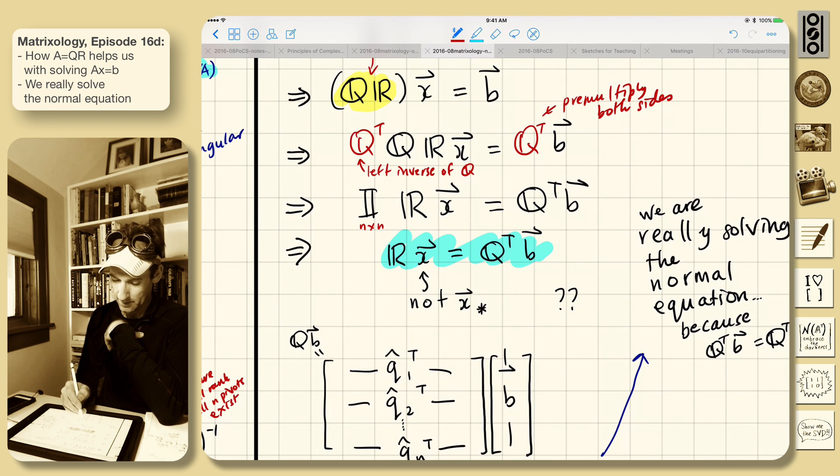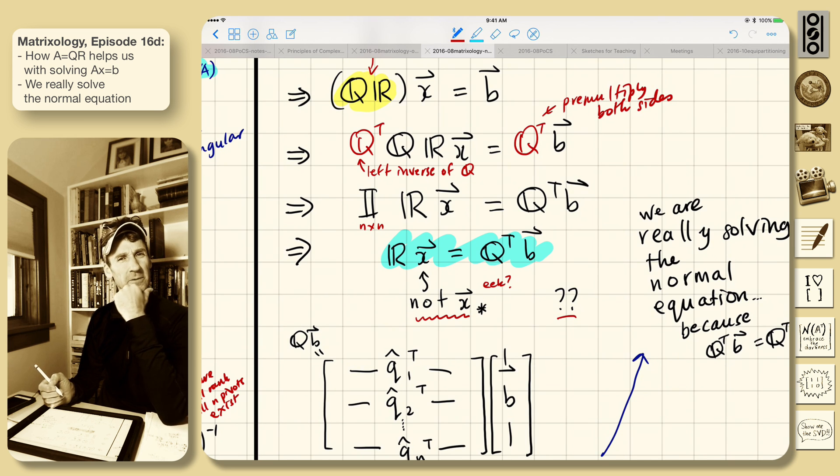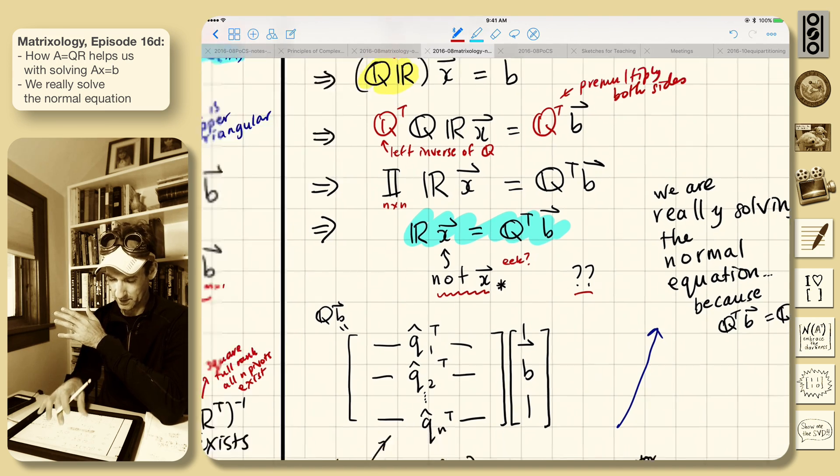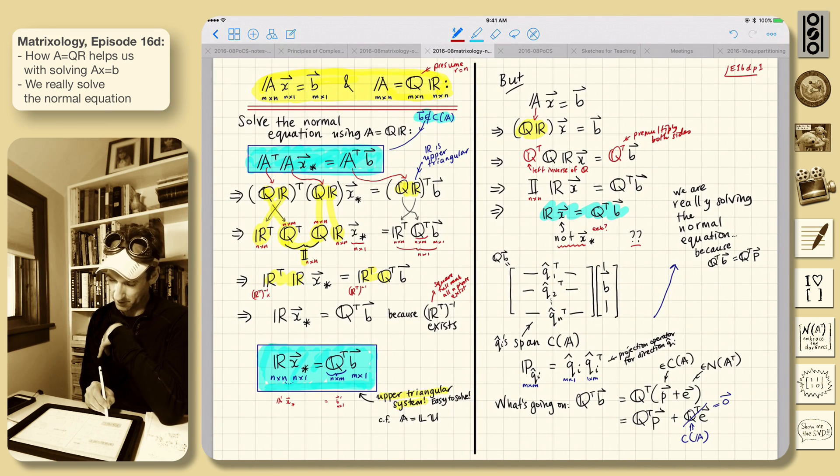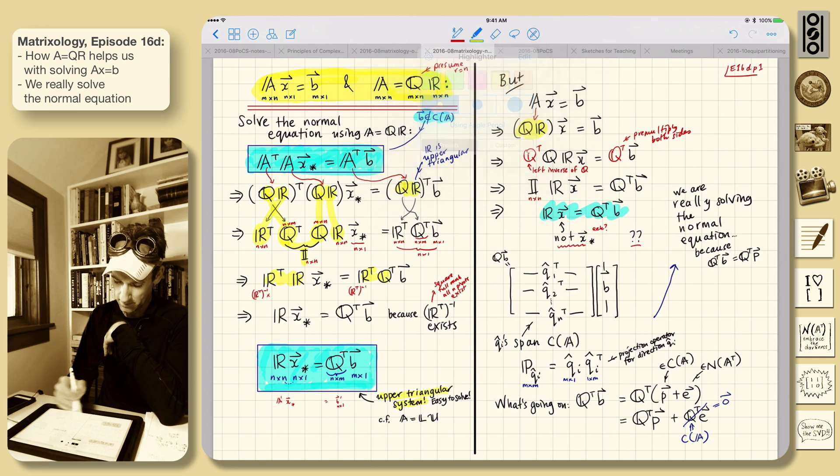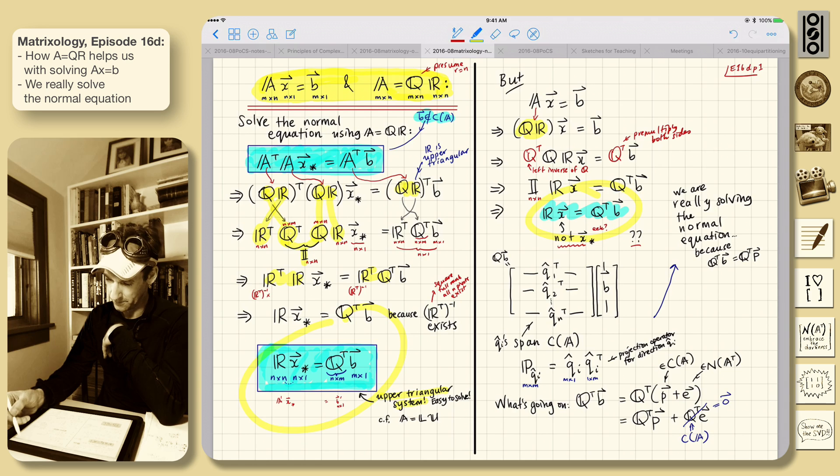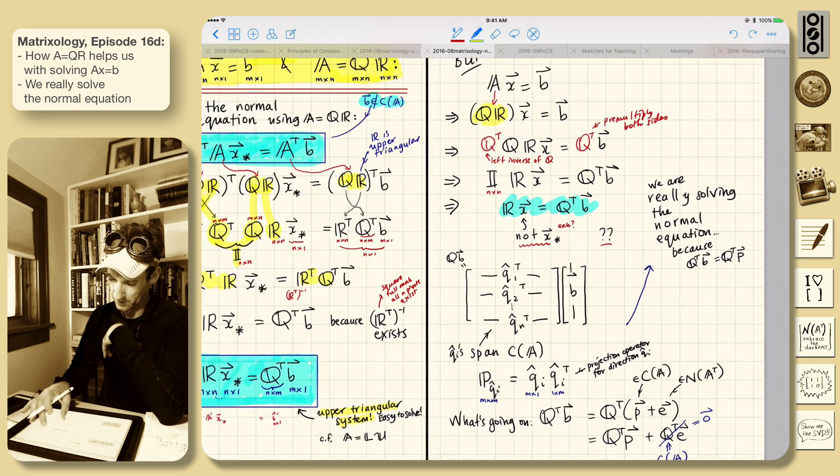But here's this problem. That's kind of weird, but we seem to have solved the problem for X in general. But we know that's not, and this is an upper triangular system. It's not the same thing. So we've got R X star equals Q transpose B over here. We've got this one and now we've got this one. But they're different things. So what's going on?